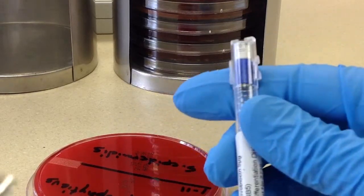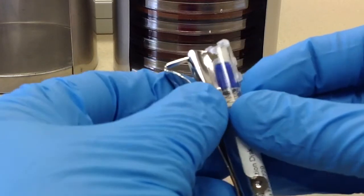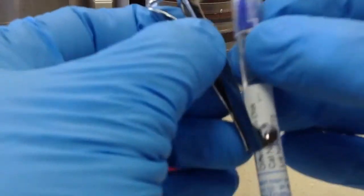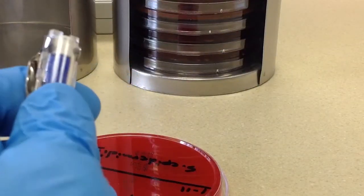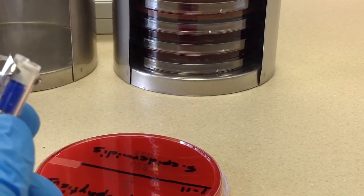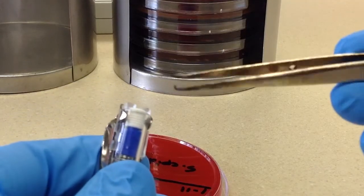so this is the novobiosin disc and they oftentimes come with these little dispensers. But even though you have the dispenser, you're probably going to have to use a forceps to grab the thing and then,